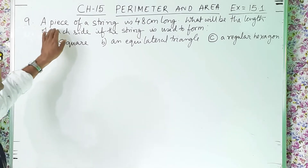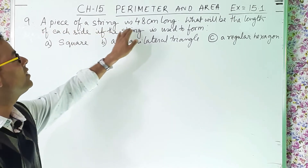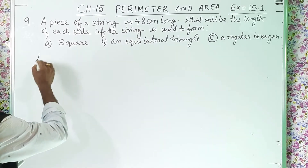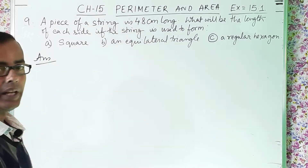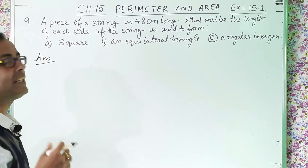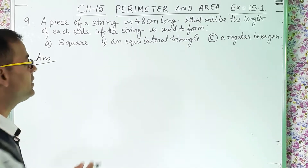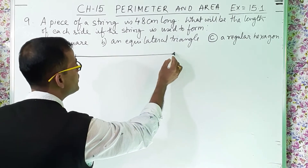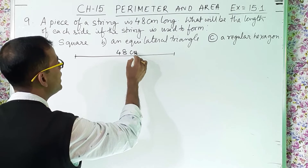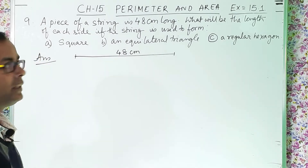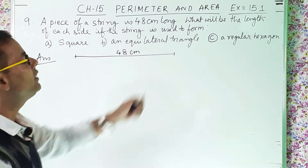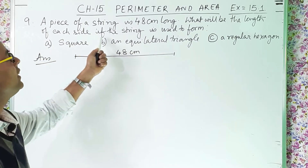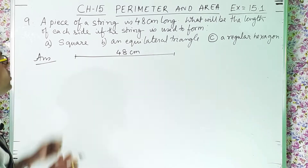Question number 9: A piece of string is 48 centimeter long. So what it is telling — one string is there and it is 48 centimeter long. Suppose this is the string and this is 48 centimeter long. What will be the length of each side if the string is used to form a square?